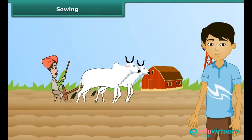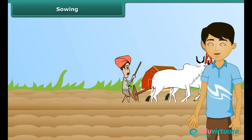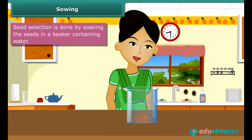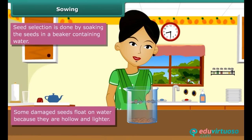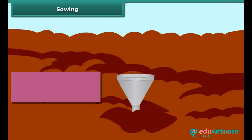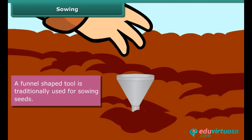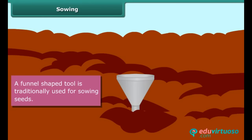Once plowing is done, the next step is sowing. Before sowing, farmers select good quality seeds to get high yields. Have you ever noticed your mother putting some grains in a vessel and pouring some water into it? Some seeds start to float because damaged seeds are hollow and hence lighter. This is a good method for separating good healthy seeds from the damaged ones. Now look at this farmer — he has a funnel-shaped tool for sowing seeds. He fills seeds into the funnel and passes them down through the sharp ends of the pipe to get them seeded in the soil.